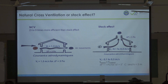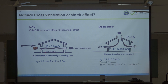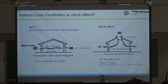Now we focus inside the building. First, a comparison between natural cross ventilation and the stack effect. If you can create a difference of pressure of 3 Pascals, you can generate a velocity of 1.3 meters per second — and 3 Pascals is a very low value compared to atmospheric pressure of 101,325 Pascals.